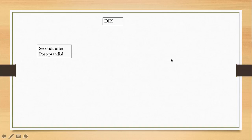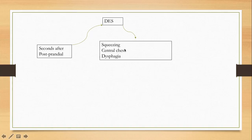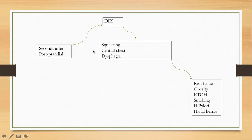Next is diffuse esophageal spasm — a condition where patients have diffuse spasm of the esophagus causing very severe chest pain, usually more severe than regular GERD. This occurs a few seconds after eating, not simultaneously with eating. Patients don't necessarily have dysphagia at onset, but the pain starts after a few seconds of having eaten. These patients have a very squeezing, tight, severe chest pain and can develop dysphagia later on.